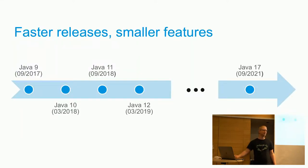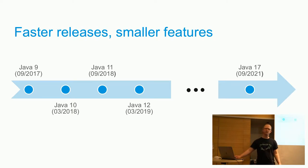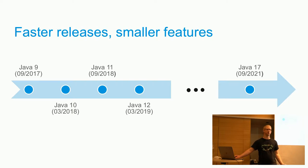Is everybody aware of the change in the release cadence for the JDK? I'm seeing lots of hands up and nodding. Historically, releases have been every two to five years, with a massive amount of features going into those releases. Starting after Java 9, releases are now every six months, which means the things going into those releases are much smaller features — you're getting smaller incremental releases, getting more things more quickly.